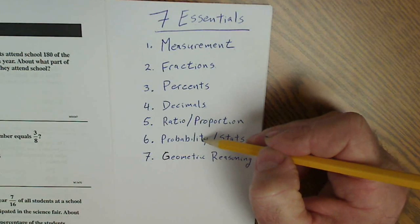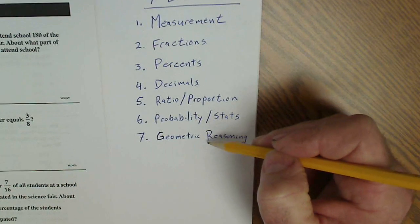Probability, the likelihood of an event, and statistics - those go together. Then geometric reasoning.